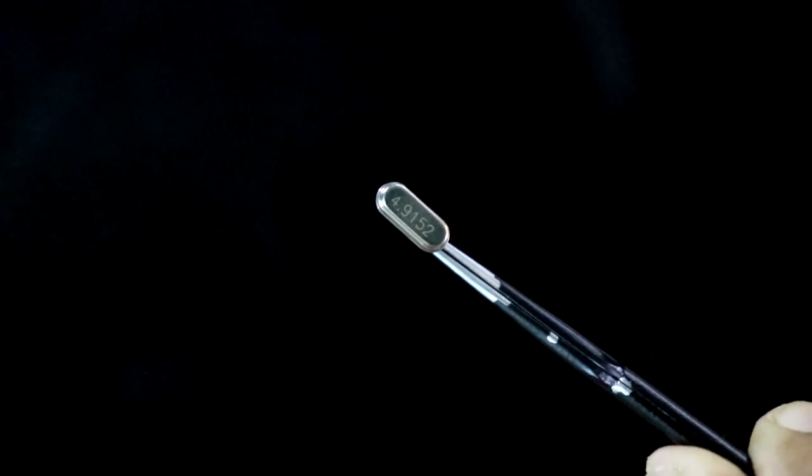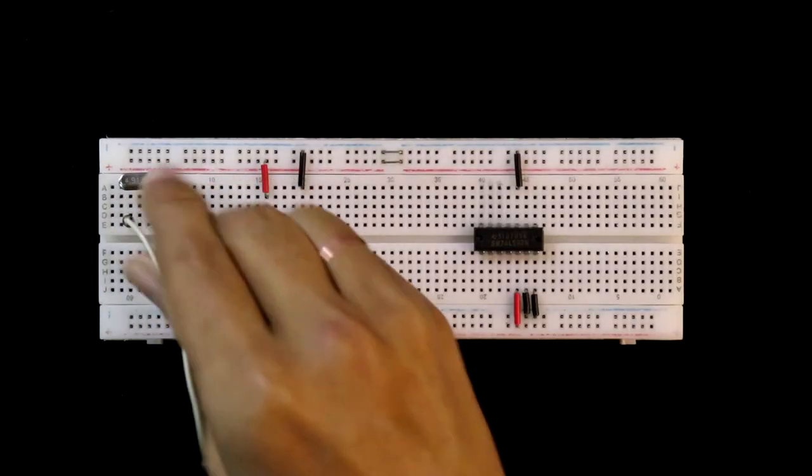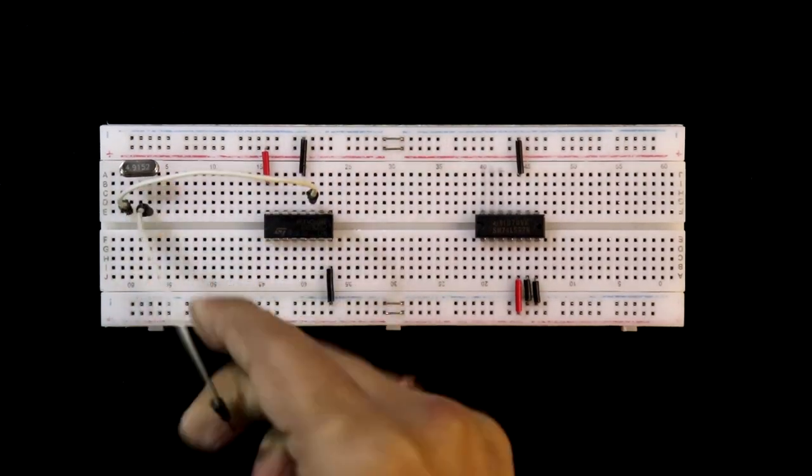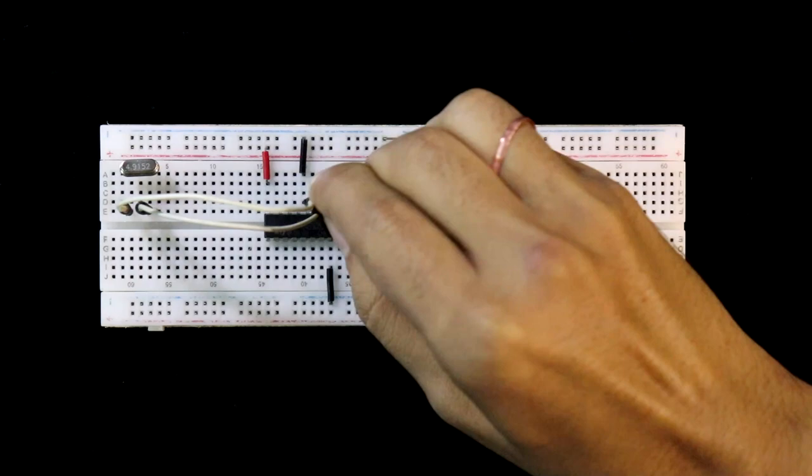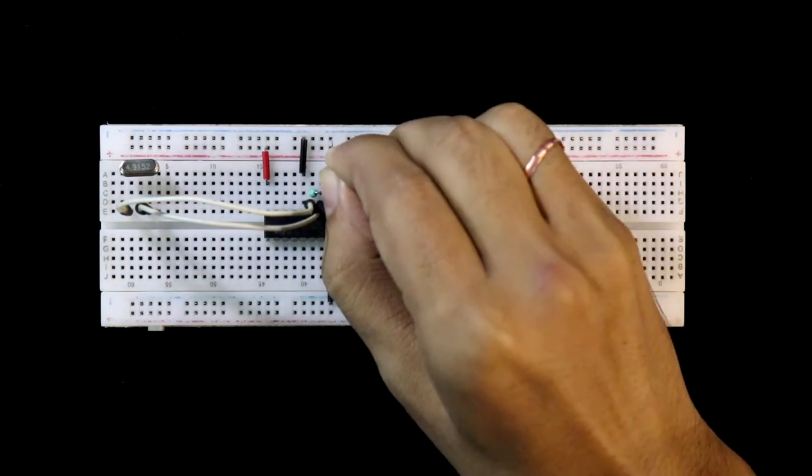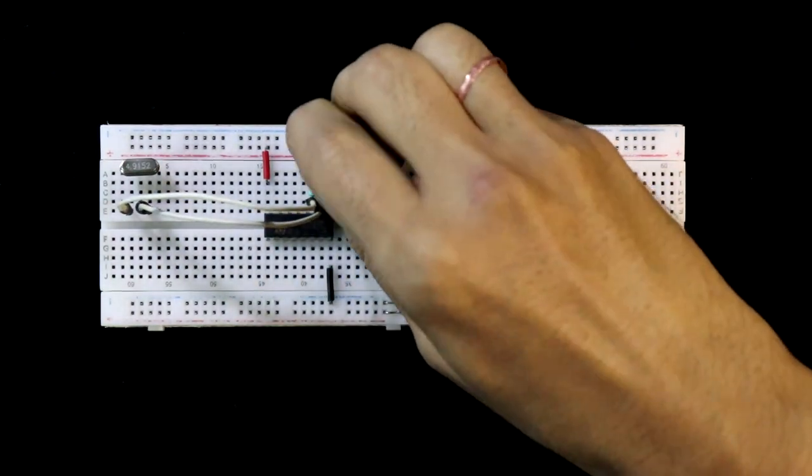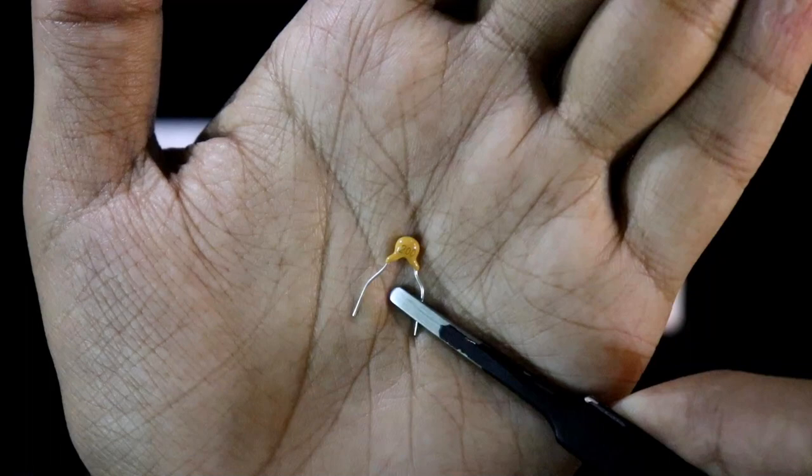This is the crystal oscillator. One pin is connected to pin number 11 and the other one to pin number 10. One megaohm is connected and the 20 picofarad capacitor. Here it is 20 picofarad.